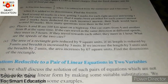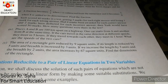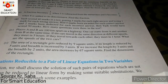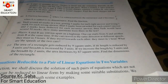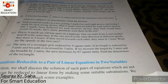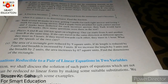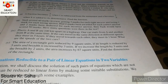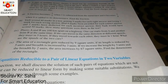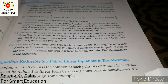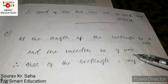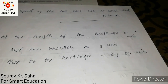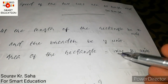The next question: the area of a rectangle gets reduced by 9 square units if its length is reduced by 5 units and breadth is increased by 3 units. If we increase the length by 3 units and the breadth by 2 units, the area increases by 67 square units. Find the dimensions of the rectangle. Let the length of the rectangle be x units and the breadth be y units.